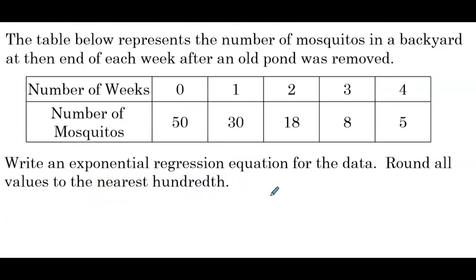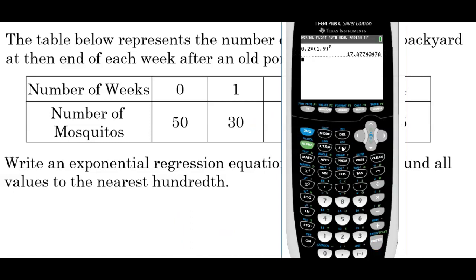The table below represents the number of mosquitoes in a backyard at the end of each week after an old pond was removed. The number of weeks is 0, 1, 2, 3, 4, with corresponding mosquito counts. Write an exponential regression equation for the data, round all values to the nearest hundredth. We can tell this is a good decision — it looks like the number of mosquitoes is being cut in half about each time. Not perfectly, but about half.